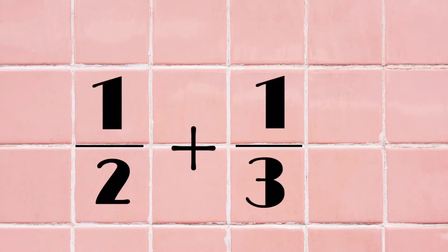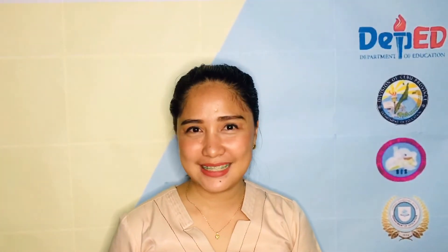Let's try 1 half plus 1 third. Step 1 is to find the least common denominator of 2 and 3. Here's how. Let's make a table for 2 and 3, multiplied by a whole.